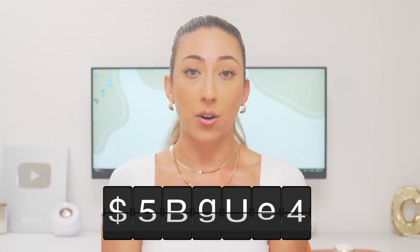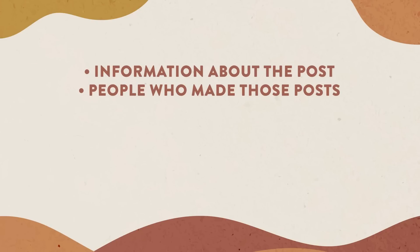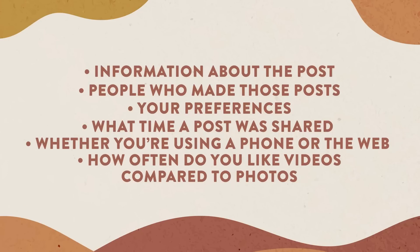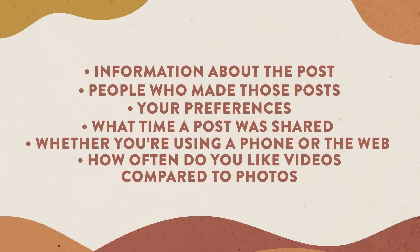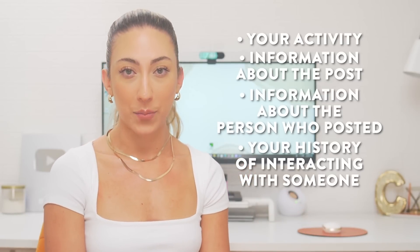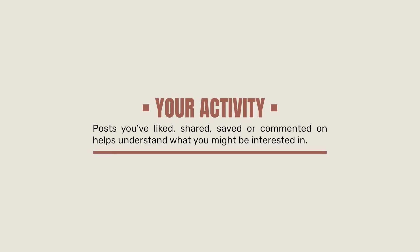How do they know who your friends and family are or what your interests are? They use something called signals. There are thousands of signals Instagram uses — information about the post itself, information about the person who made it, your preferences, who you follow, the content you like, the time a post was shared, whether you're on your phone or web browser, whether you engage more with reels or photos. For feed, the most important signals roughly in order of importance are your activity, information about the post, information about the person who posted, and your history of interacting with someone. With your activity, they look at posts you've liked, shared, saved, or commented on to understand what content you might be interested in.